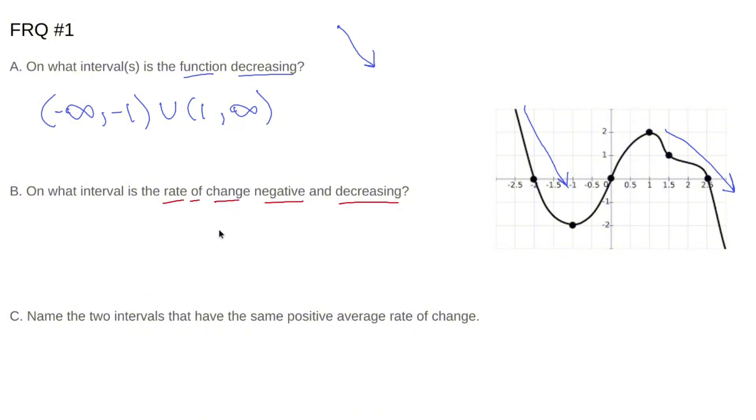So it's asking when is the slope negative? That does mean down and to the right. But also, if the rate of change is decreasing, that also means concave down. So we need the part where it's going down and to the right and also concave down.